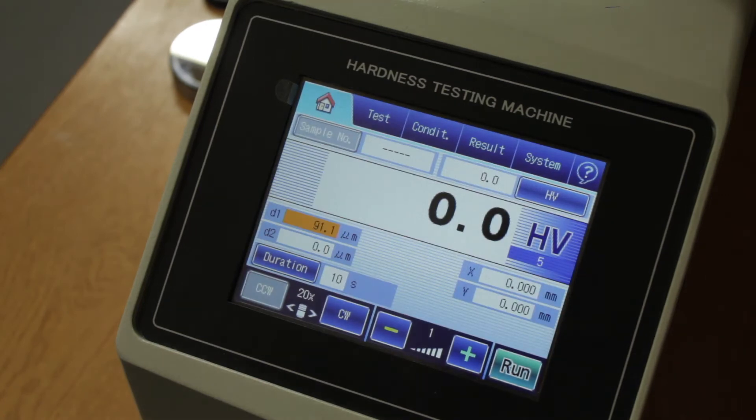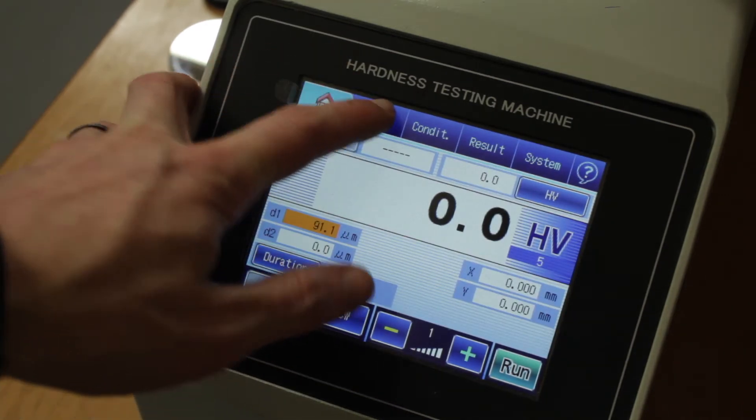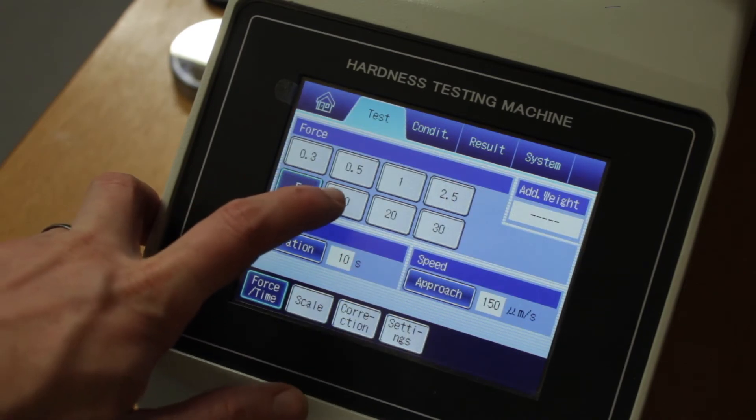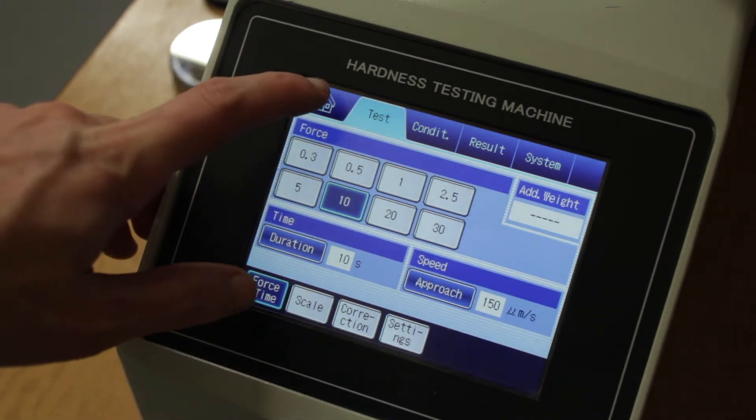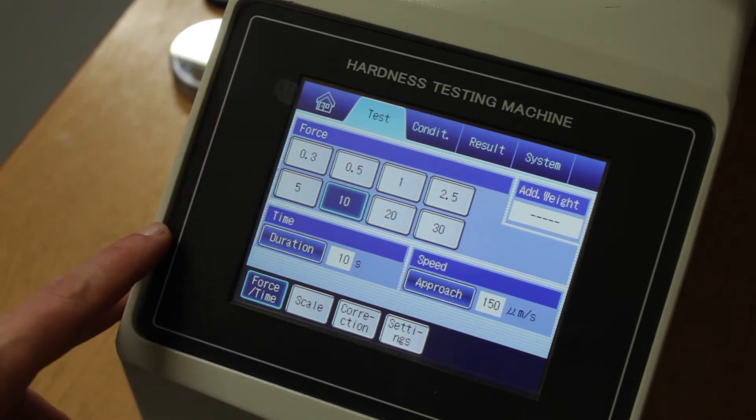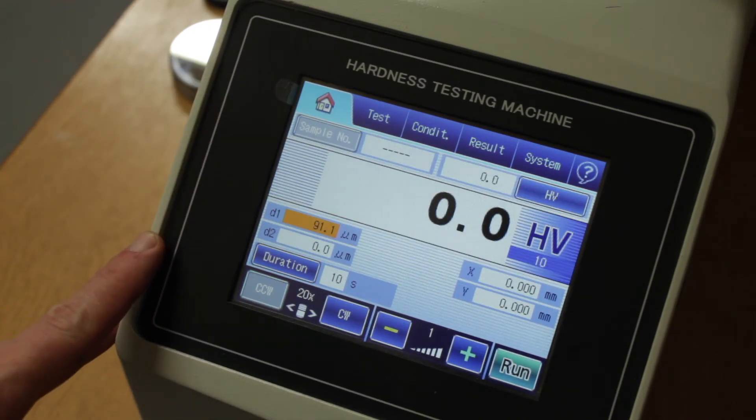This is a touch screen interface and the first thing you'll need to do is set up the test conditions. The force is dependent on the sample. Softer materials need a smaller force, but for most ferrous samples, 10kg force will be sufficient.